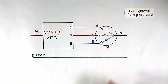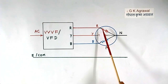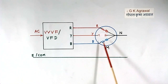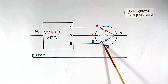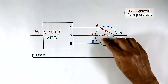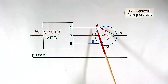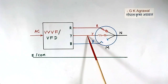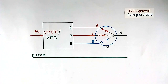Similarly, suppose the fault is here. In that case, the voltage of this point will be between R and B — you can see it like this, as this phase is open. Similarly, if the fault is here, then the voltage of this point will be in between R and Y. So by finding the voltage of this neutral point, we can find out the location of the fault.